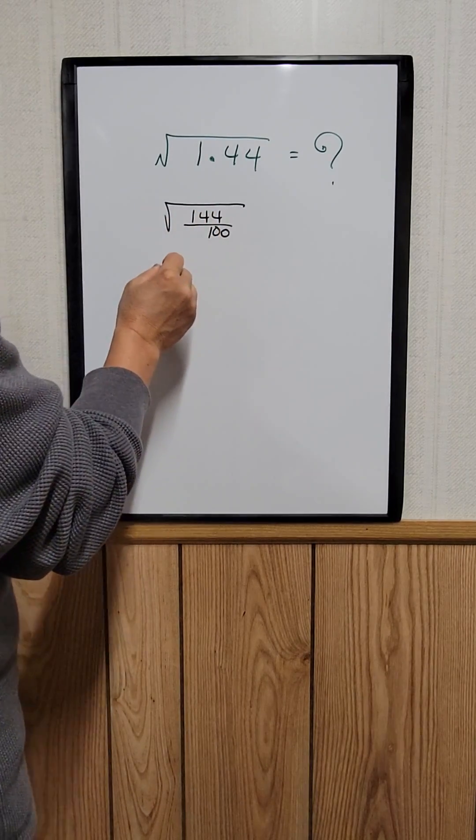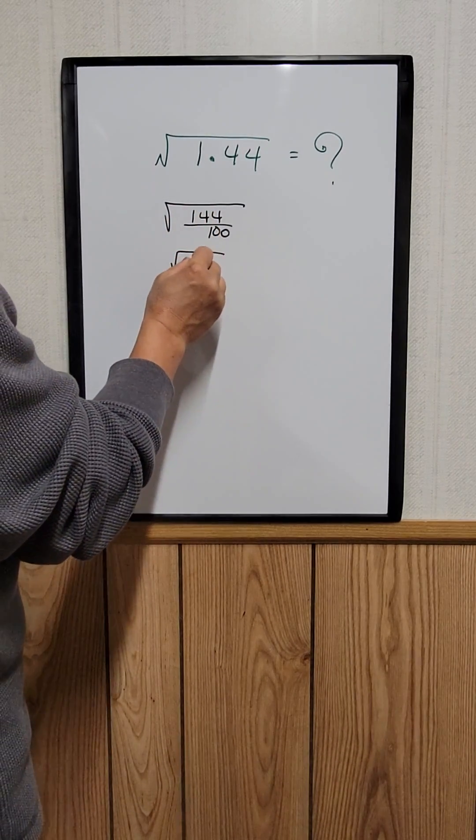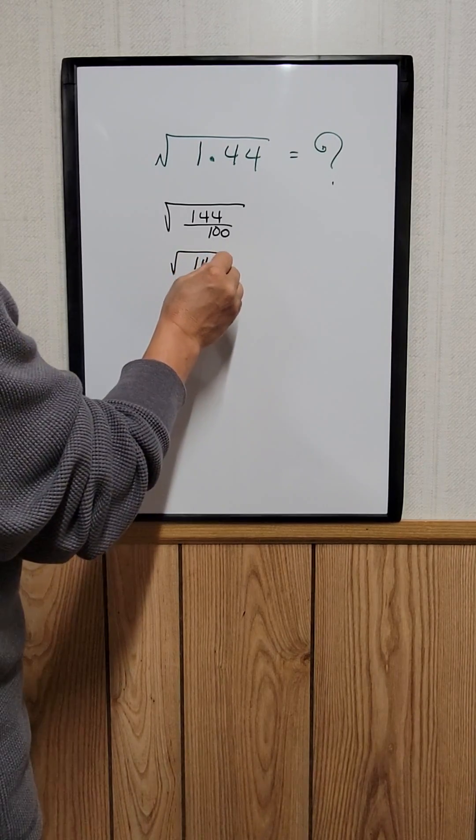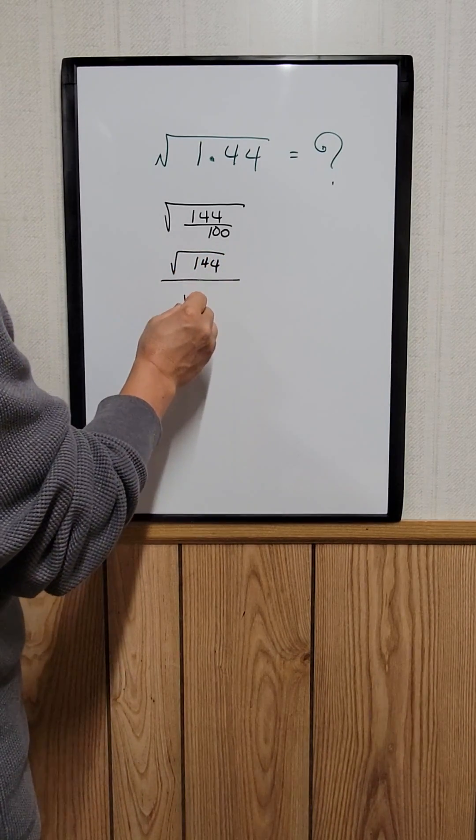This can be written as the square root of 144 divided by the square root of 100.